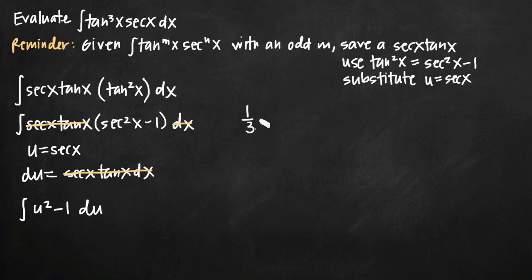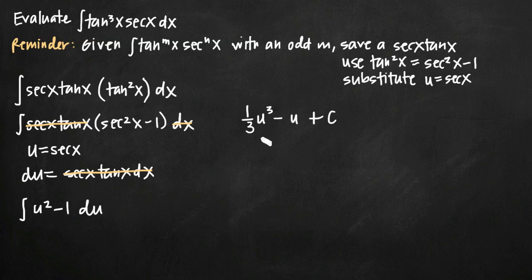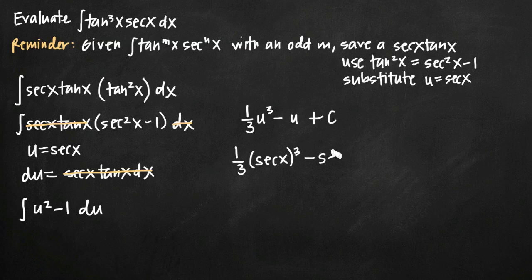When we do, we'll get 1 third u cubed minus u plus c. We can't forget to add our constant of integration. But that's our integration using power rule. Now we just need to back substitute for u. So we'll get 1 third times secant of x cubed minus secant of x plus c.